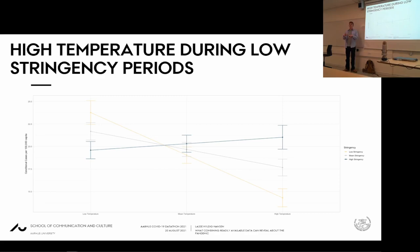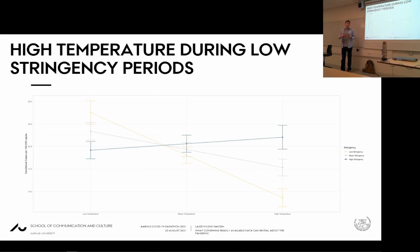Another effect we found: changing the X-axis to temperature, when restrictions are high, temperature has no effect on COVID-19 incidents — the blue line is flat. But when restrictions are low, higher temperatures significantly reduce COVID-19 incidents. This means government implementations actually work, and weather has no effect on incidence levels when restrictions are that high.